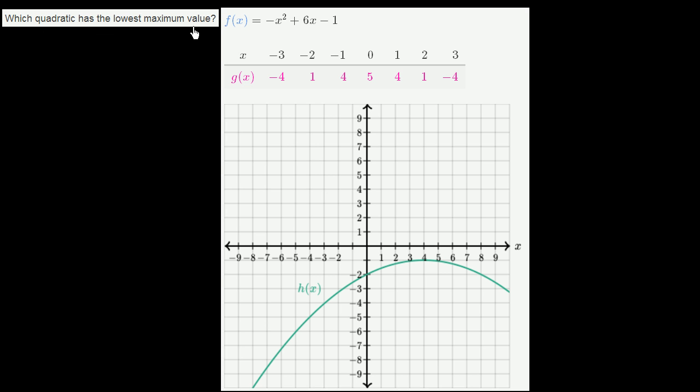Which quadratic has the lowest maximum value? Let's figure out the maximum value for each of these - they're defined in different ways - and then see which one is the lowest.